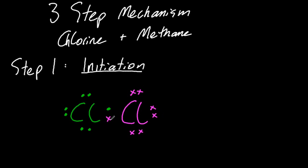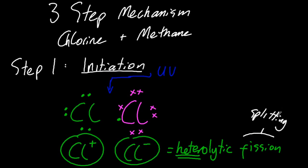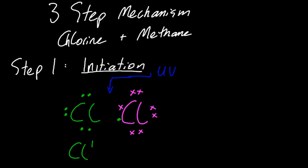So if I take the chlorine molecule, draw the dot and cross diagram and shine ultraviolet light on it, there are two things that could happen to the electrons in the bond. They could both go to one chlorine, leaving a chlorine plus and a chloride ion. That's called heterolytic fission. Hetero means different because it produces two different things. But that's not what happens. So the answer to the initiation problem isn't heterolytic fission.